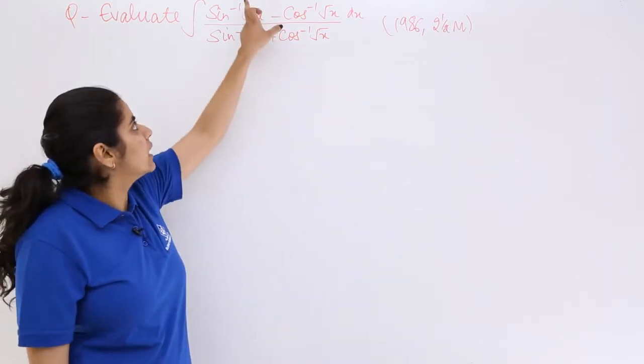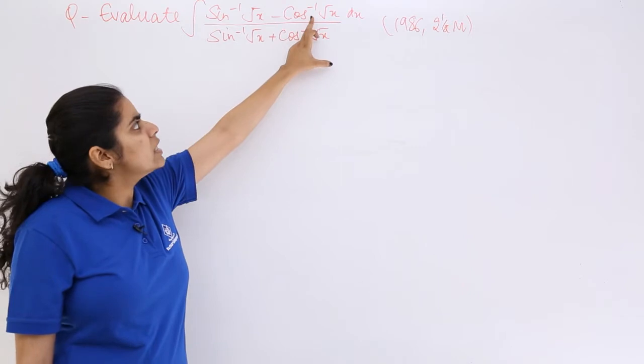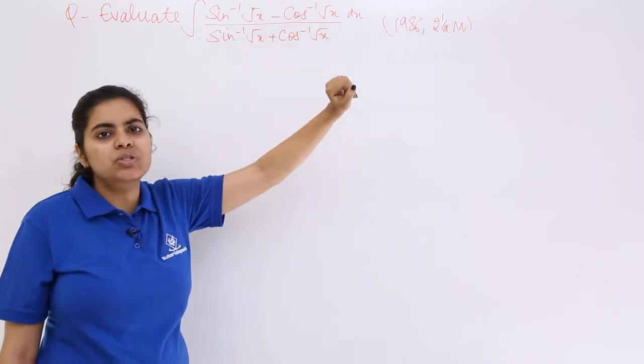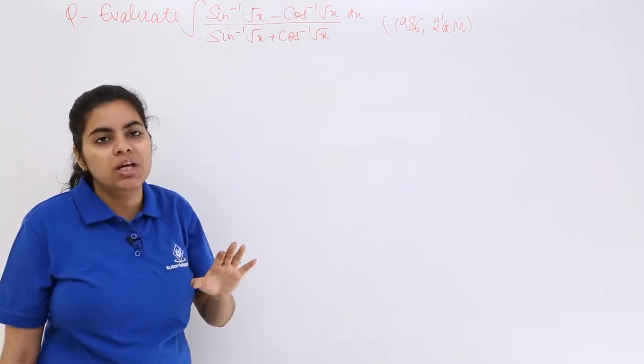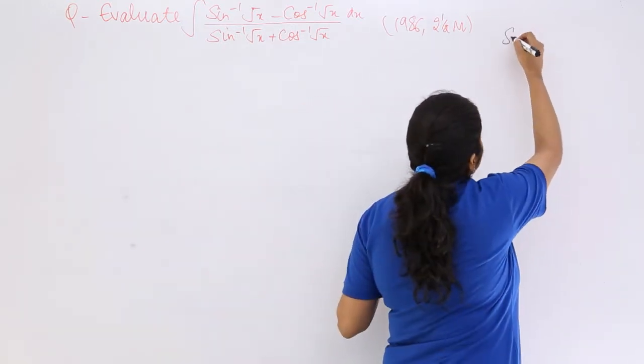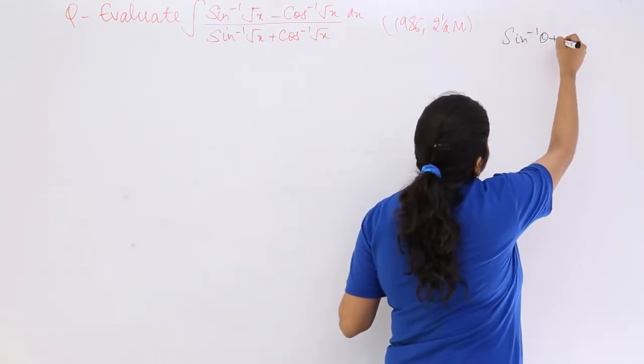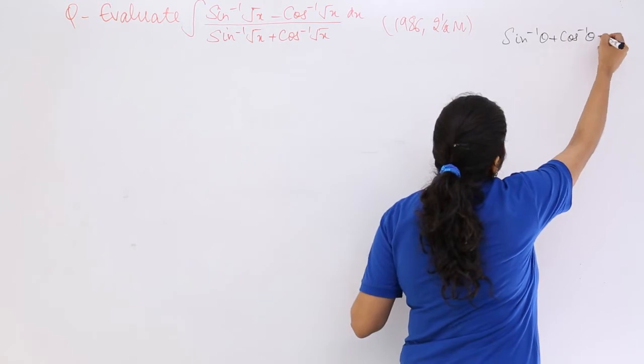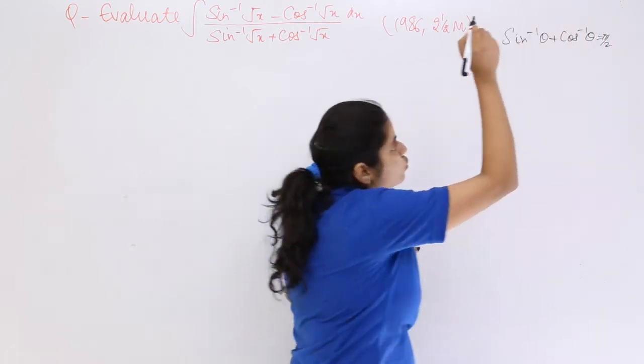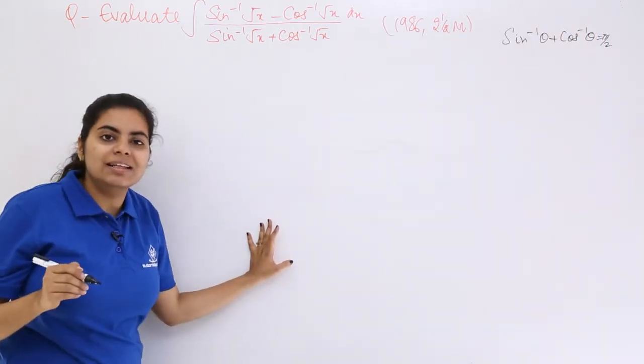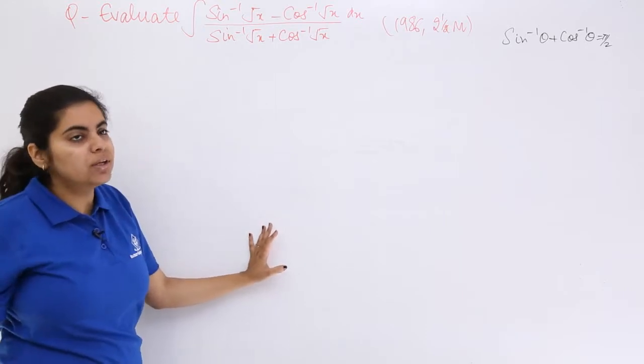The numerator has sin inverse root x, and if this can be made in the form of sin inverse root x it will be very helpful. So first, I'm going to use sin inverse theta plus cos inverse theta equals π/2.